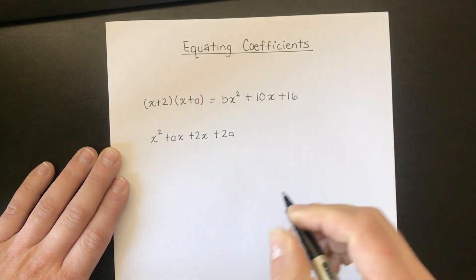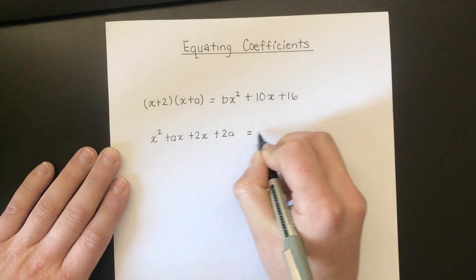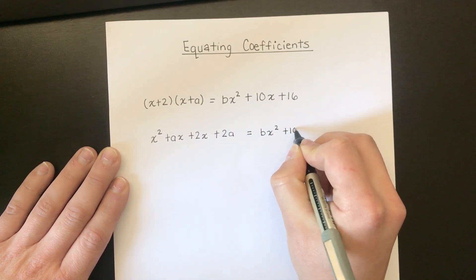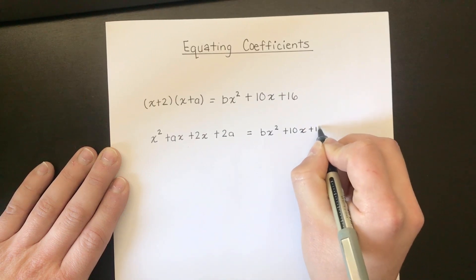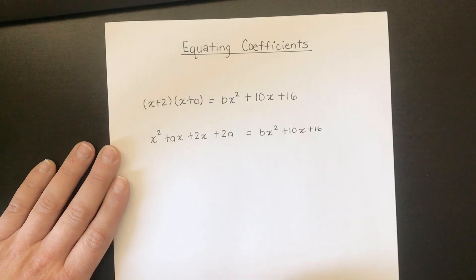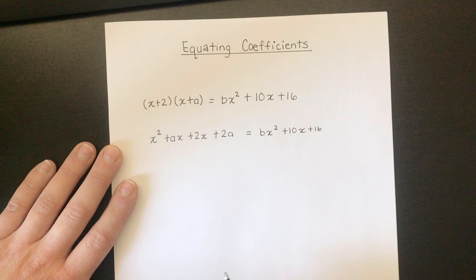Now it says that that is going to be exactly the same as bx² + 10x + 16. Now coefficient is really just a fancy word for saying what is in front of the letter x or the letter x² or something like that.